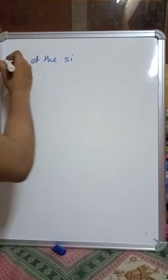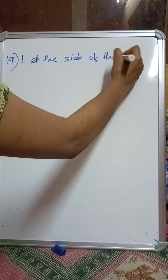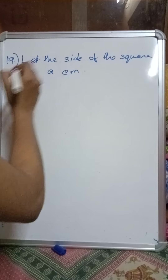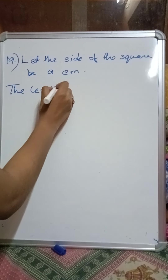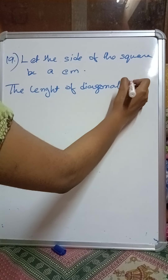The question: the length of the diagonal of a square is 12 root 2 centimeters — find the area of the square. To find the area we need to know the side of the square. So let the side of the square be 'a' centimeters. The length of the diagonal is given as 12 root 2 centimeters.